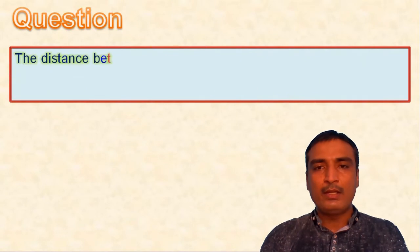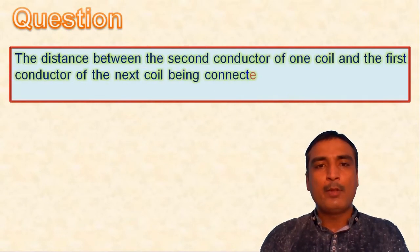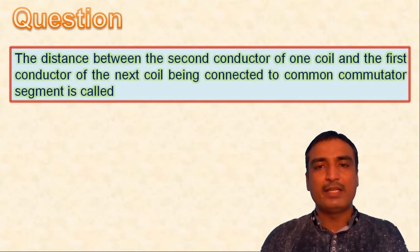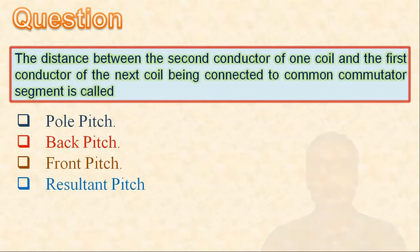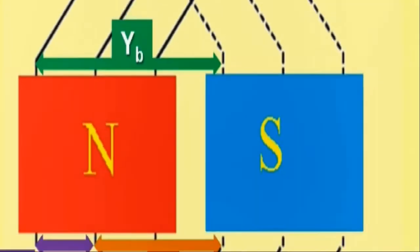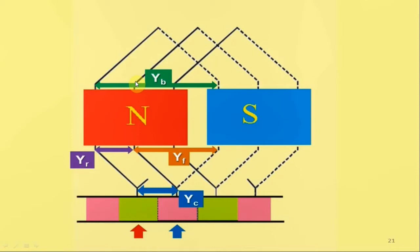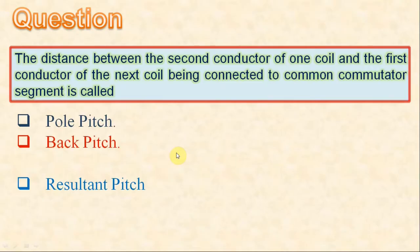Next question: the distance between the second conductor of one coil and the first conductor of the next coil being connected to a common commutator segment is called — pole pitch, back pitch, front pitch, or resultant pitch. As seen in this figure, the distance between the second conductor of one coil and the first conductor of the next coil is the front pitch. So the third option is correct.